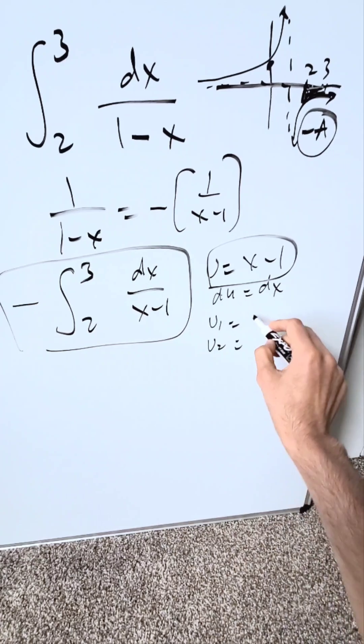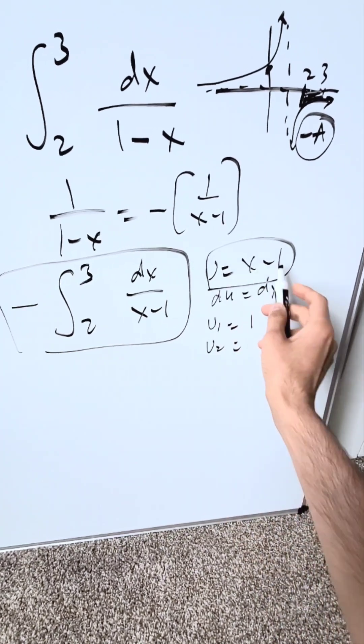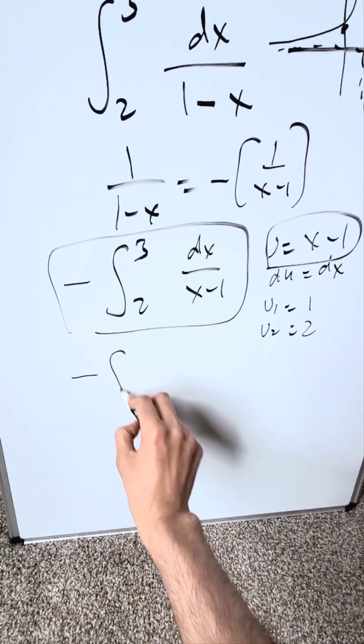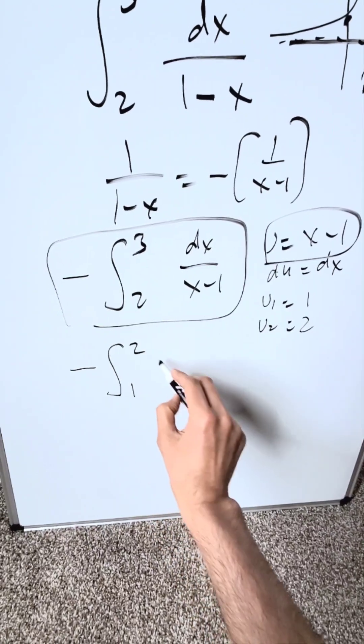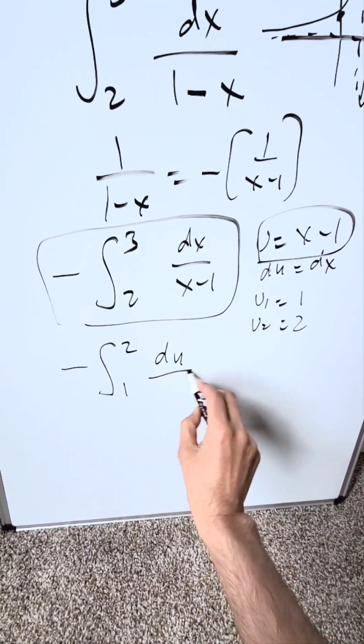u1: x minus 1, 2 minus 1, I have a 1. u2: 3 minus 1, I have a 2. I'm looking here at this. I have here 1 and a 2, a du over here, a u.